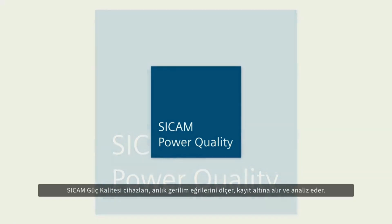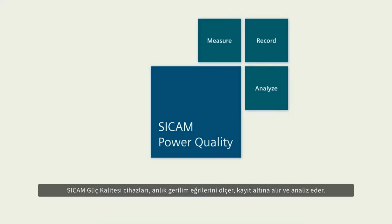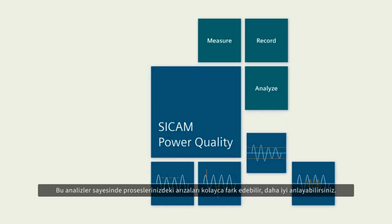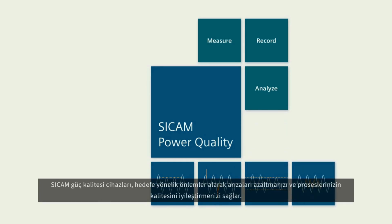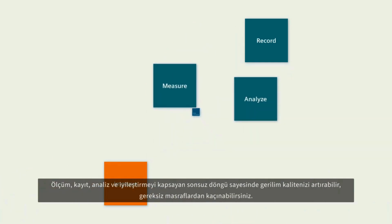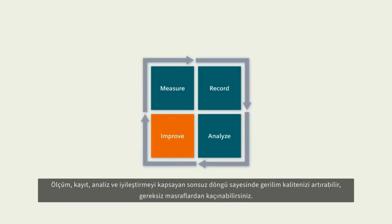Secamp Power Quality devices measure, record, and analyze current and voltage curves. Analysis makes interferences in your processes visible and understandable. You can then reduce interferences with targeted countermeasures and improve your processes. Measure, record, analyze, and improve — with this continuous action loop you increase voltage quality and avoid unnecessary costs.